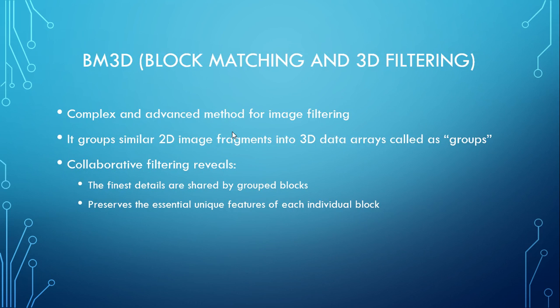Block matching and 3D filtering, or BM3D, is the most complex and advanced method for image filtering. It groups similar 2D image fragments into 3D data arrays called groups. Collaborative filtering reveals that the finest details are shared by grouped blocks while preserving the essential unique features of each individual block.